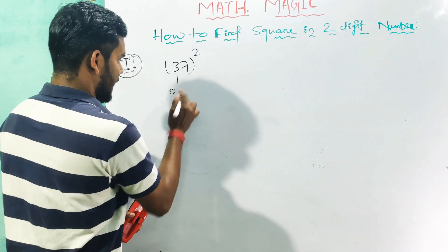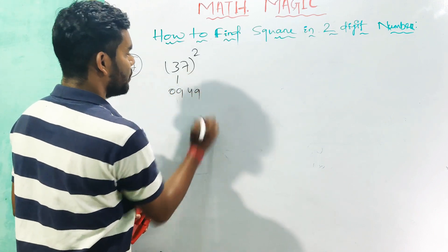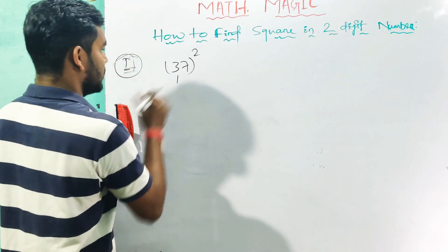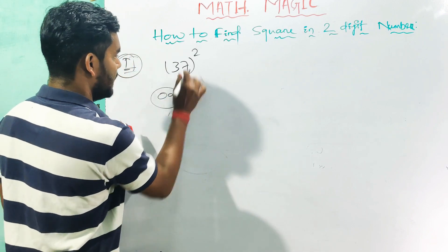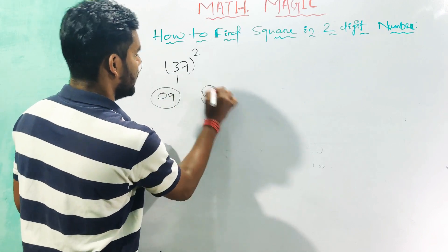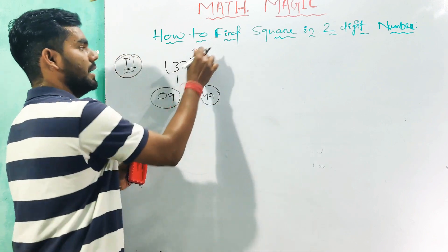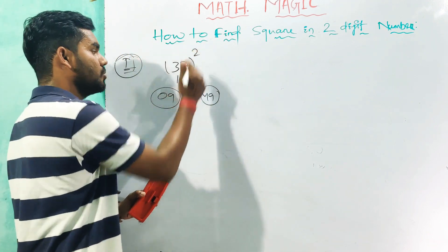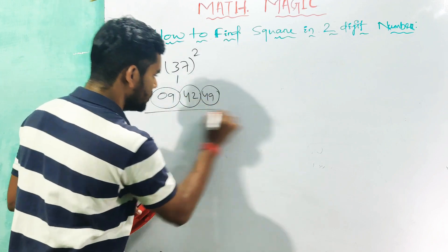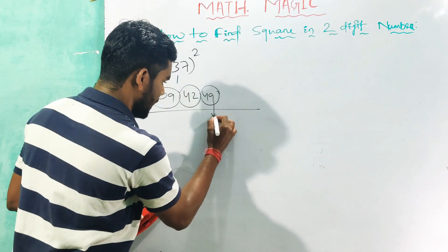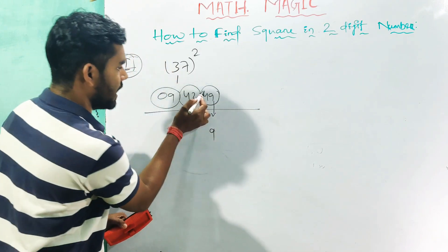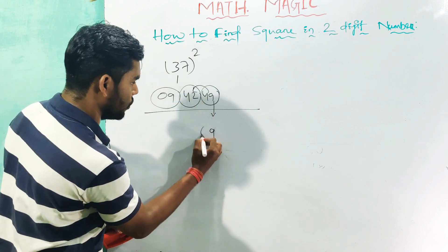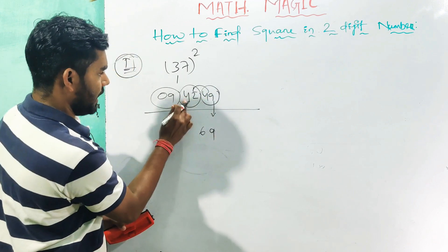9, 7 into 7 is 49. 3, 9 into 7 is 49, 3 into 2 is 42. First term: 4 plus 2 is 6, 8. First term.